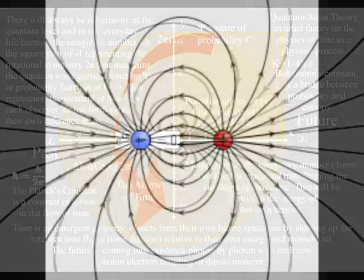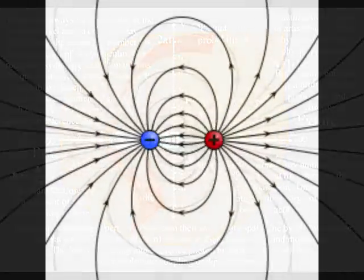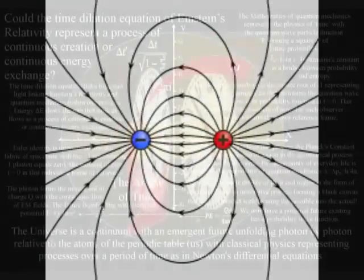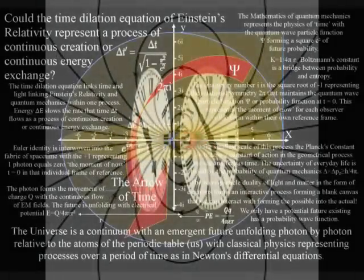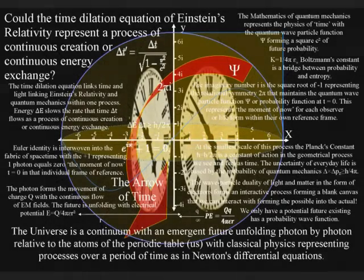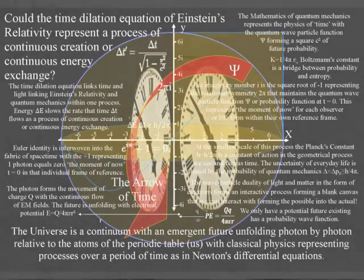In such a theory, the mathematics of quantum mechanics represents the physics of time as a physical process, with classical physics representing processes over a period of time as in Newton's differential equations.